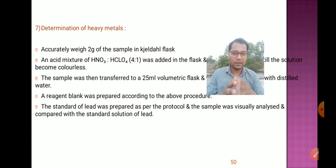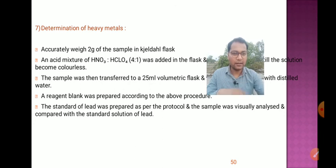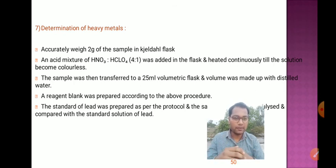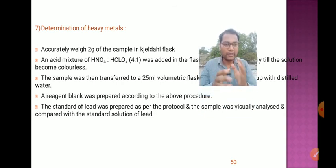For determination of heavy metals, 2 grams of sample is accurately weighed in a Kjeldahl flask. An acid mixture of HNO3 and hydrochloric acid is added and heated continuously until the solution becomes colorless. The sample is then transferred to a 25 ml volumetric flask and volume is made up with distilled water. A reagent blank is prepared according to the same procedure. A standard lead solution is prepared as per protocol, and the sample is visually analyzed and compared with the standard lead solution.